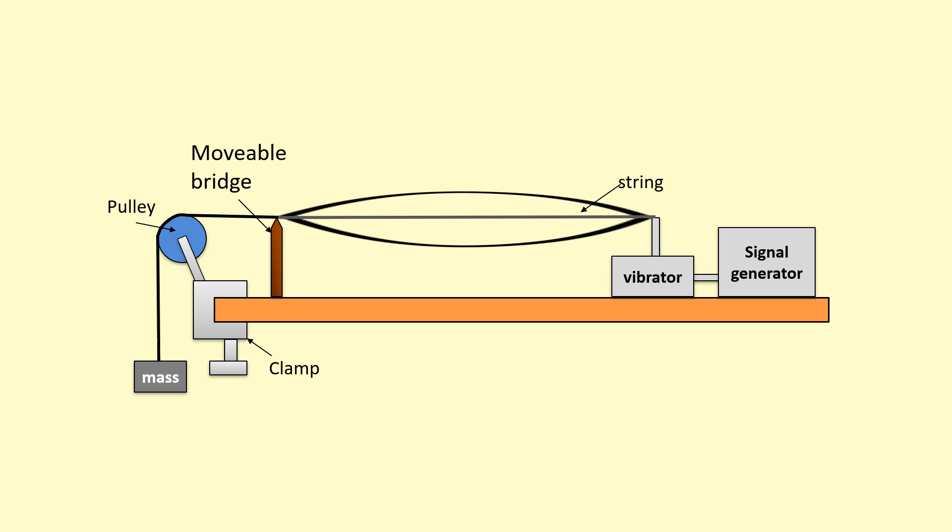Okay so in this practical you're going to set up like so. You've got the signal generator and the vibrator, you've got a string over a pulley and then a mass hanging on it.